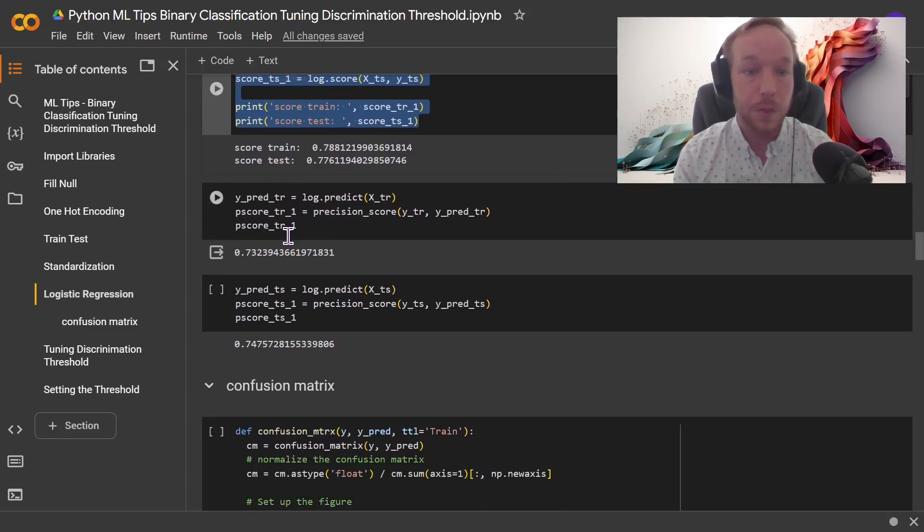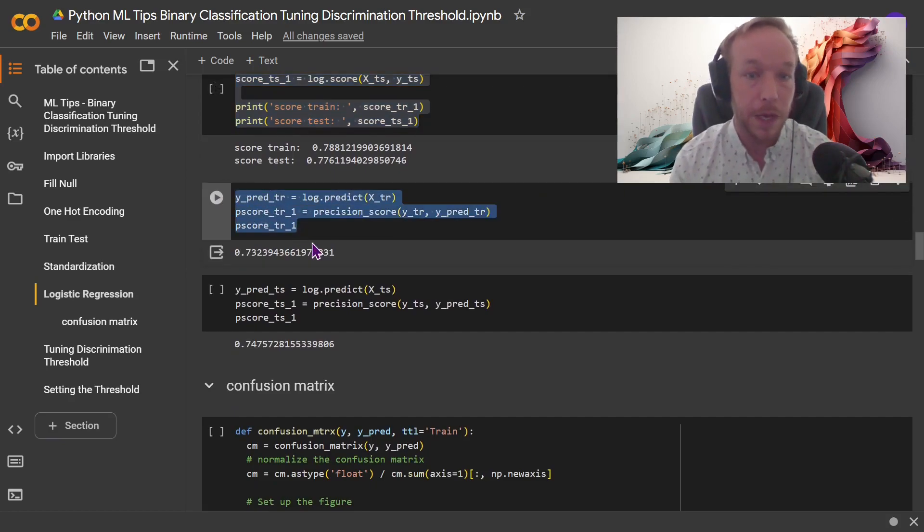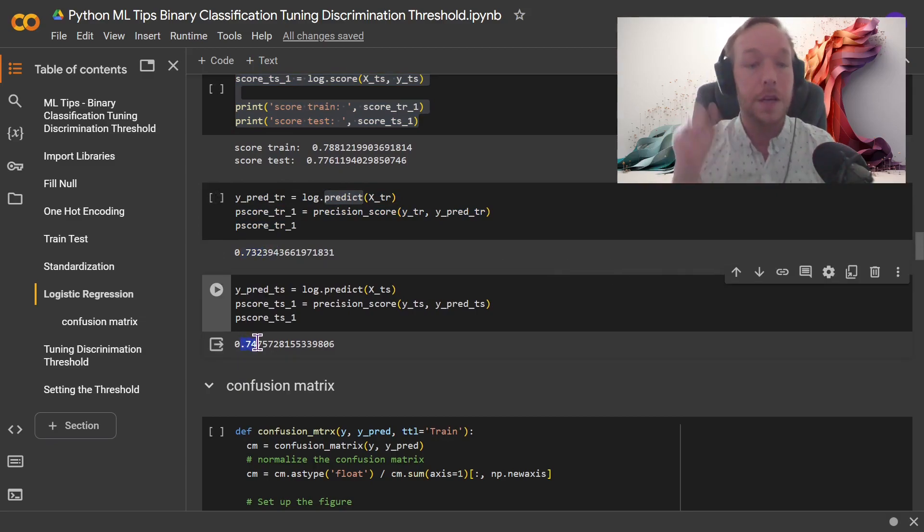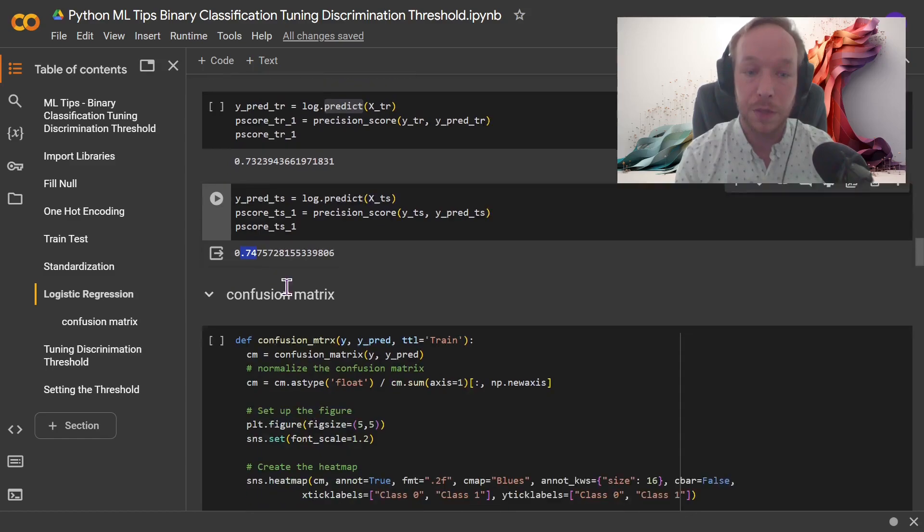So train test split. And then what we're going to do here is we're going to do standardization, logistic regression. And then, so we predicted, when we predicted by default, what happens is we do dot predict. So we've all seen this before, we get an accuracy of 73. I didn't do a lot of pre-processing, not the most amazing thing. Again, we're focusing on the discrimination threshold today.